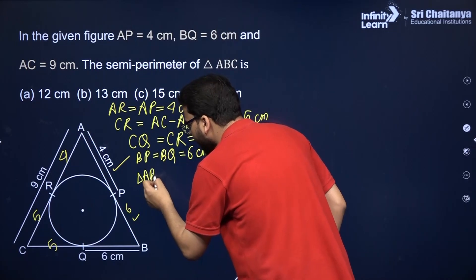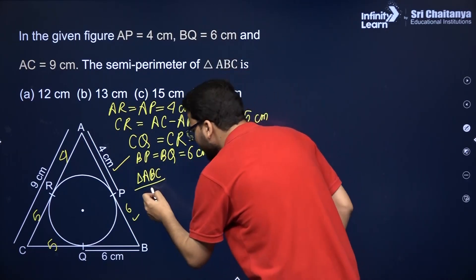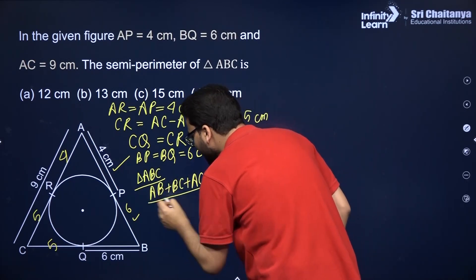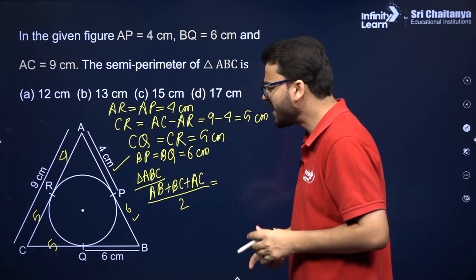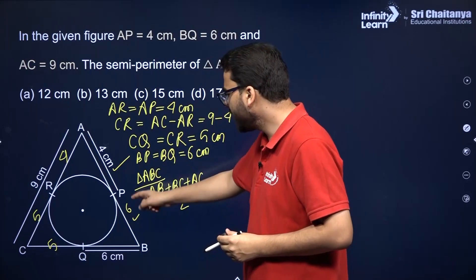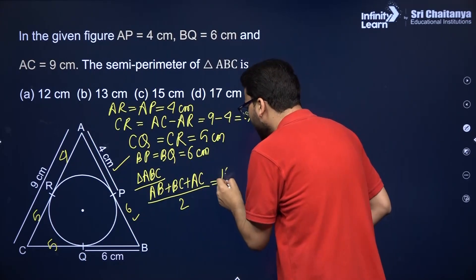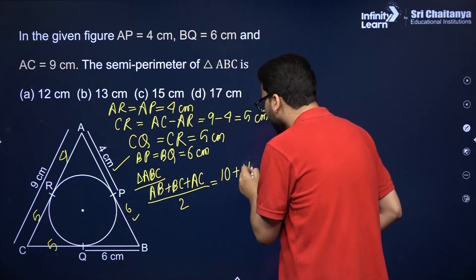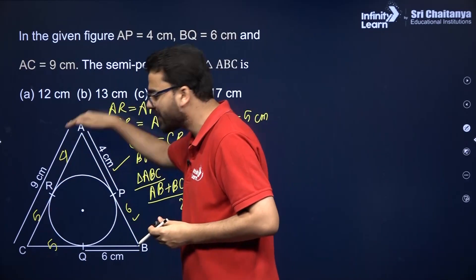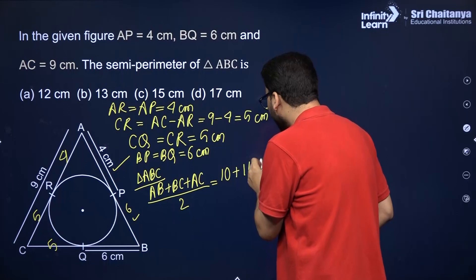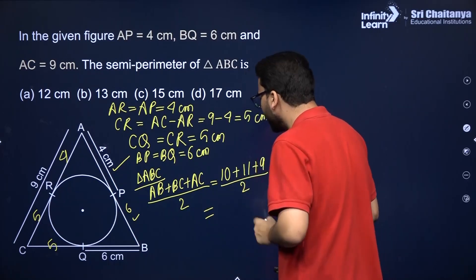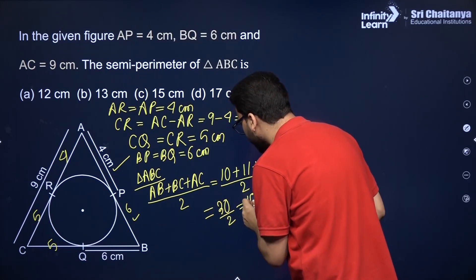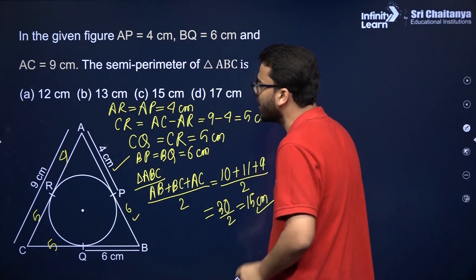The perimeter of triangle ABC is AB plus BC plus AC. AB equals 6 plus 4 equals 10. BC equals 6 plus 5 equals 11. AC is already given as 9. So the semi-perimeter is (10 plus 11 plus 9) divided by 2, which is 30 divided by 2, equals 15 centimeters.